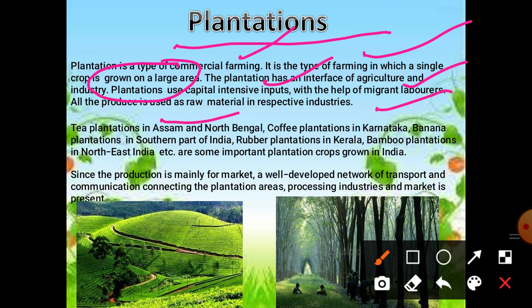All produce is used as raw material in respective industries — like rubber, sugar cane, tea and coffee — which are then converted into more valuable goods. Tea plantation is done in Assam and North Bengal. Coffee plantation in Karnataka. Banana in southern India. Rubber in Kerala. Bamboo in northeastern India. Since production is mainly for the market, a well-developed network of transportation and communication connecting plantation areas, processing industries and markets is essential.